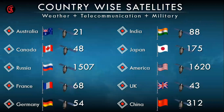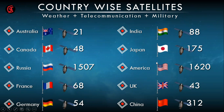Looking at satellite counts by country: Australia has around 21, Canada 48, Russia 1,507, France 68, Germany 54, India 88, Japan 175, USA 1,620, UK 43, and China 302. This shows how many satellites are orbiting the earth from different countries.